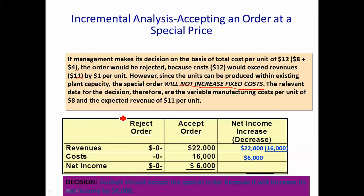The relevant data for this decision are the variable manufacturing costs per unit. We have two alternatives: reject the order or accept the order. If I reject the order, I get nothing. But if I accept the order, I sell 2,000 units at $11 each, so my revenue will go up by $22,000.